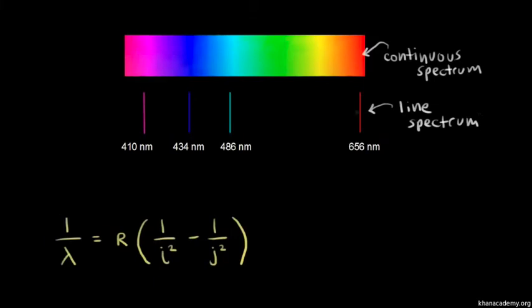You see one red line, and that red light has a wavelength of 656 nanometers. You'll also see a blue-green line at 486 nanometers, a blue line at 434 nanometers, and a violet line at 410 nanometers. This emission spectrum is unique to hydrogen, and so this is one way to identify elements. Since line spectra are unique, it's important to explain where those wavelengths come from.